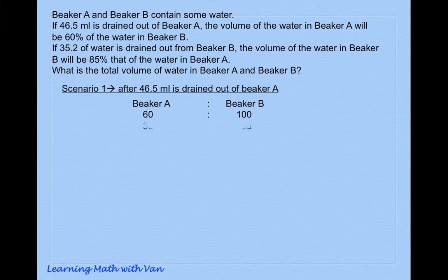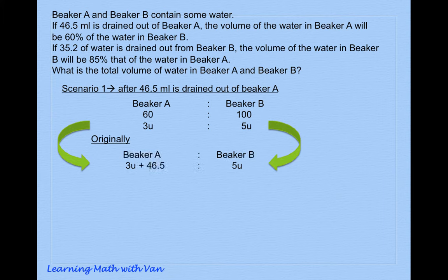This is the volume of water after scenario one, but remember these are hypothetical examples or situations—it never happened. So what is the original amount or volume of water in both beakers? We have to add back 46.5 ml to beaker A.